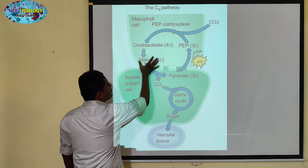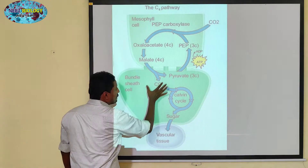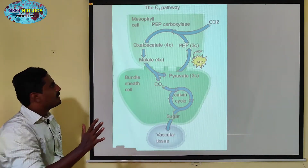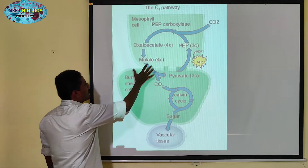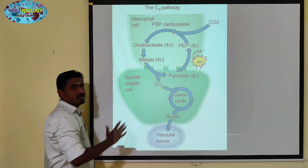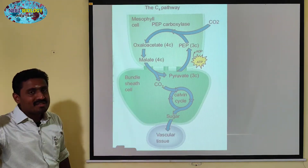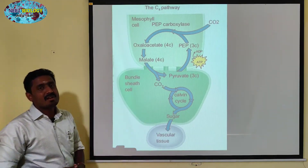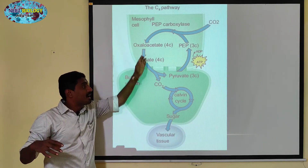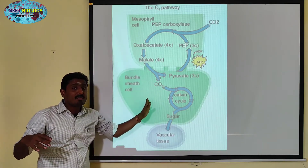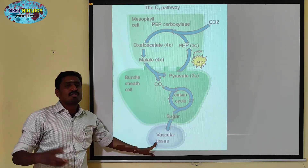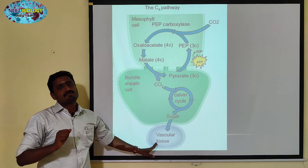Malate is then moving into the bundle sheath cells. From the bundle sheath cells, if you have to go to the C3 cycle, you can prepare carbohydrates. That is the flow.